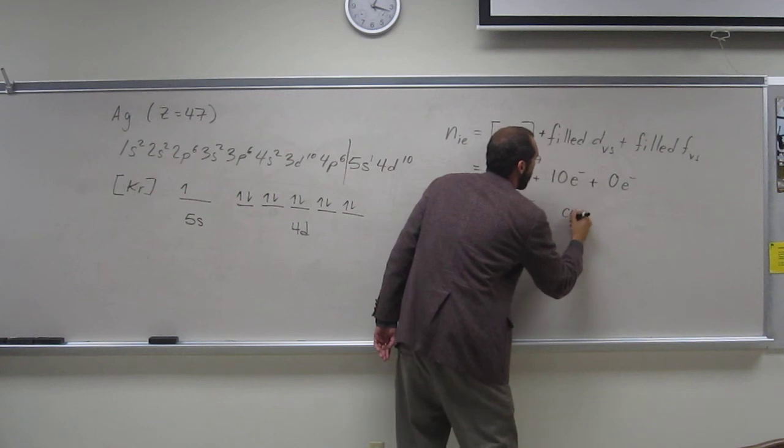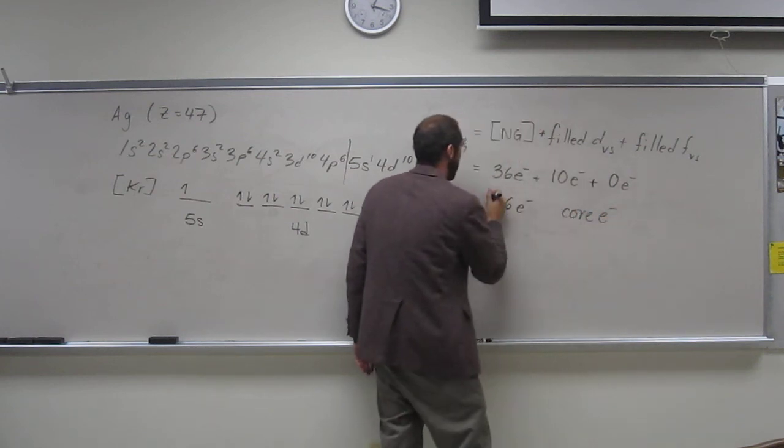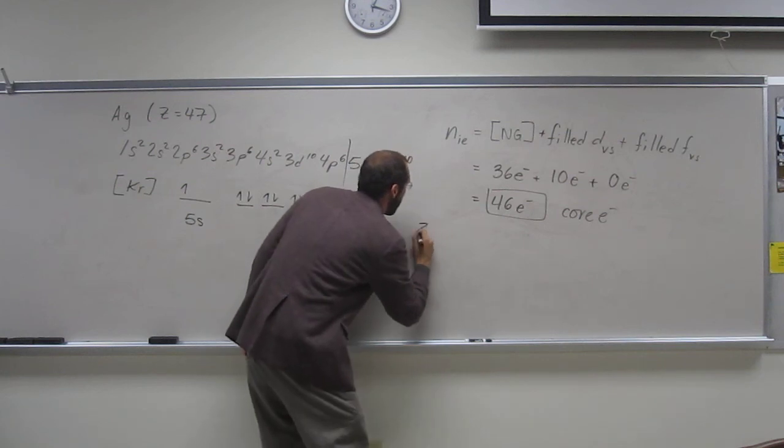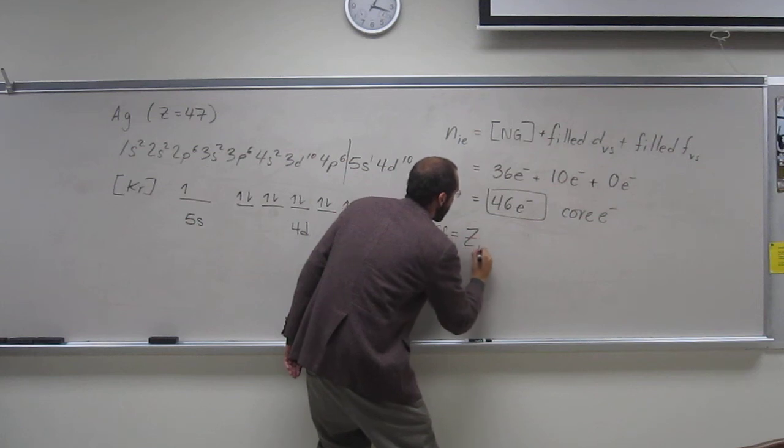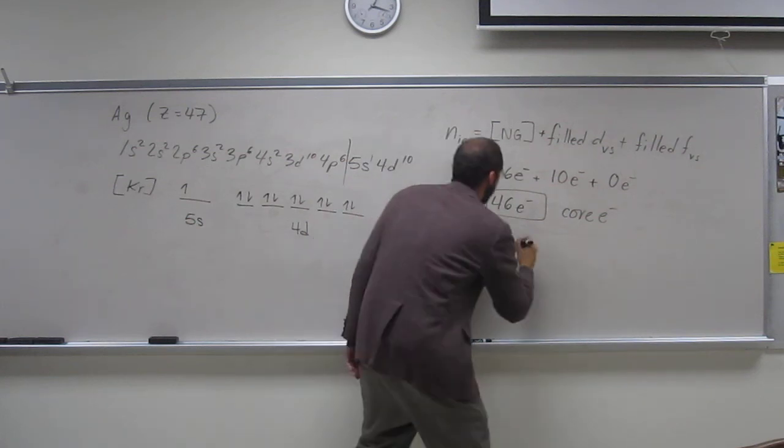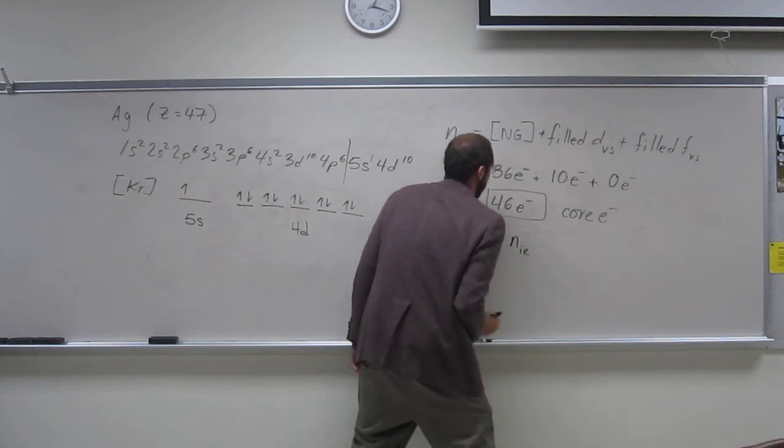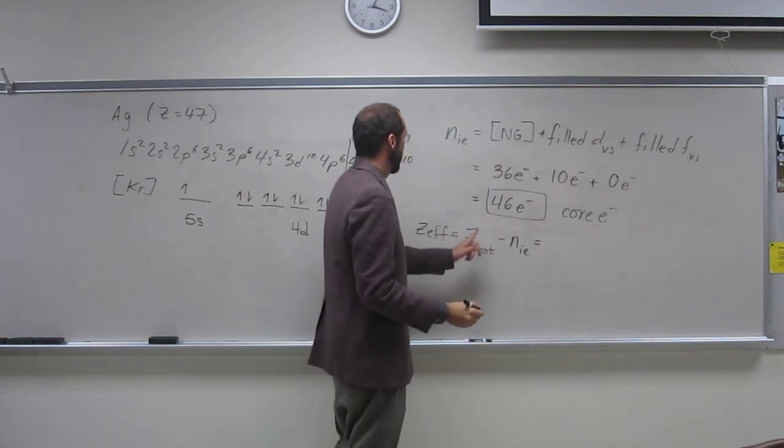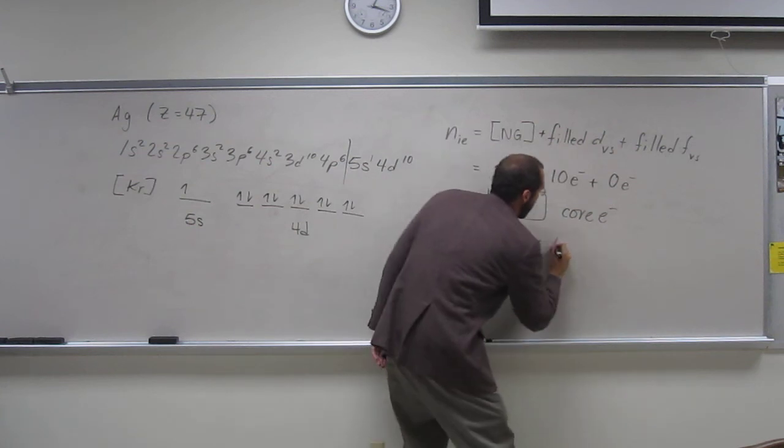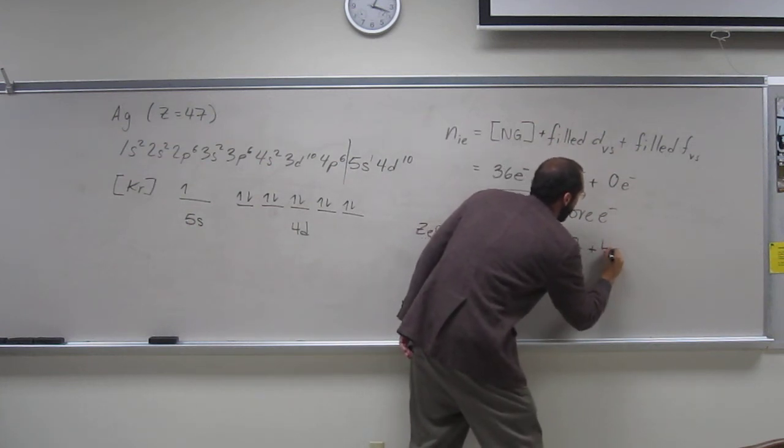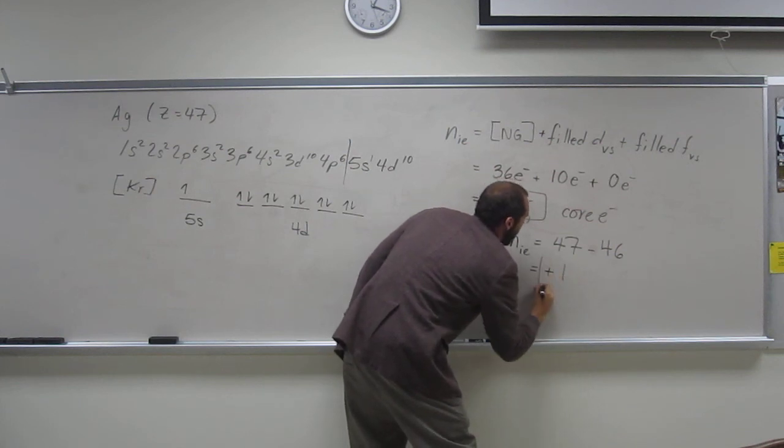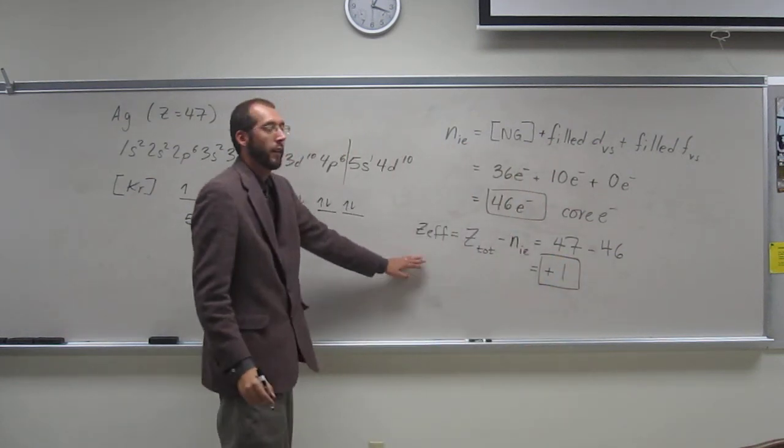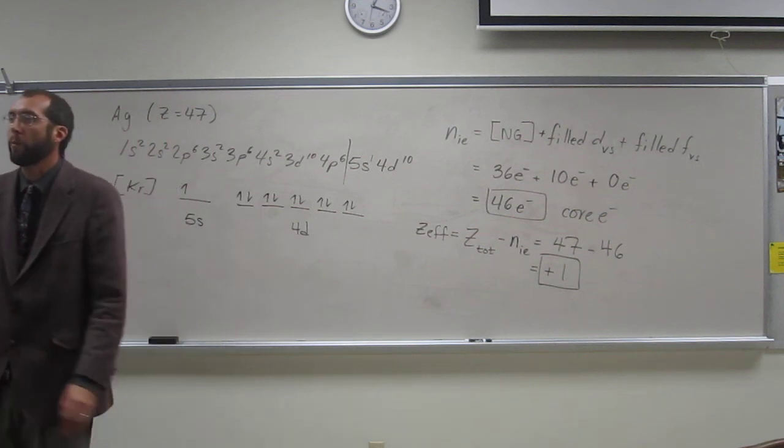So that's the number of core electrons, and the effective nuclear charge, of course, is the z total, minus the number of inner electrons. So the z total is 47 minus inner electrons, 46, so we've got an overall effective nuclear charge of plus one per valence electron.